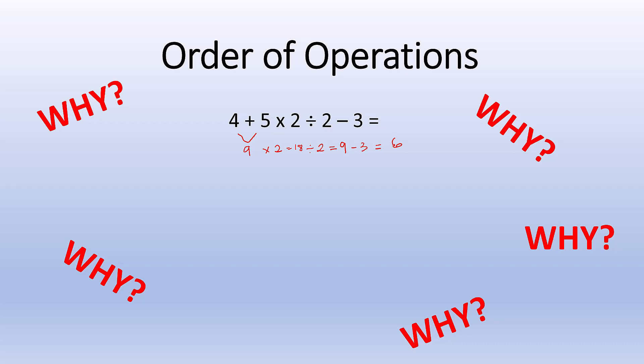But what if I decided to go ahead and do the multiplication first? So I have 4 plus 5 times 2 gives me 10, divided by 2 minus 3. So now I decide, I did the 5 times 2, let me go ahead and go from left to right.